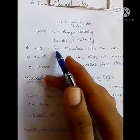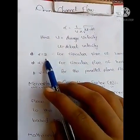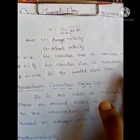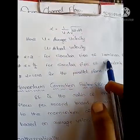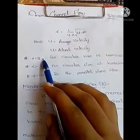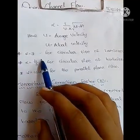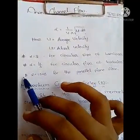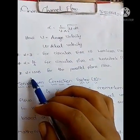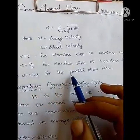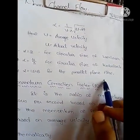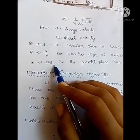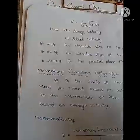For different flow conditions, alpha takes constant values. Alpha equals 2 for circular pipe with laminar flow. Alpha equals 4/3 for circular pipe with turbulent flow. Alpha equals 1.543 for parallel plane flow. So simply, this is about the kinetic energy correction factor.